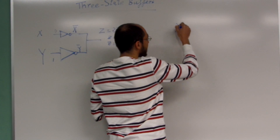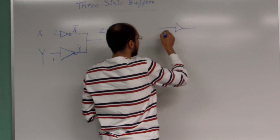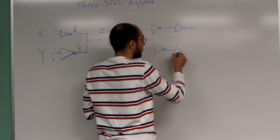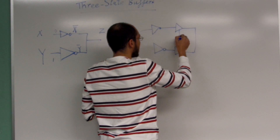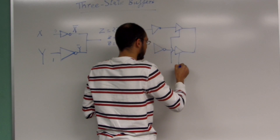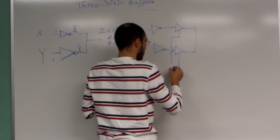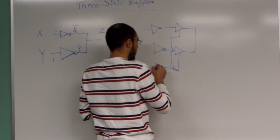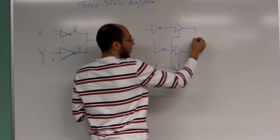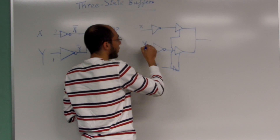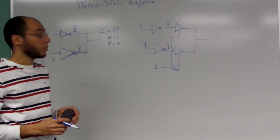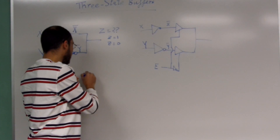What we do is connect a three-state buffer, and connect another three-state buffer at the input of the other NOT gate. We have an enable E here. Both three-state buffers are enabled with an enable E. The input X goes here, the input Y goes here; this produces X bar and this produces Y bar. Before I explain this circuit, I'm going to explain what a three-state buffer does.